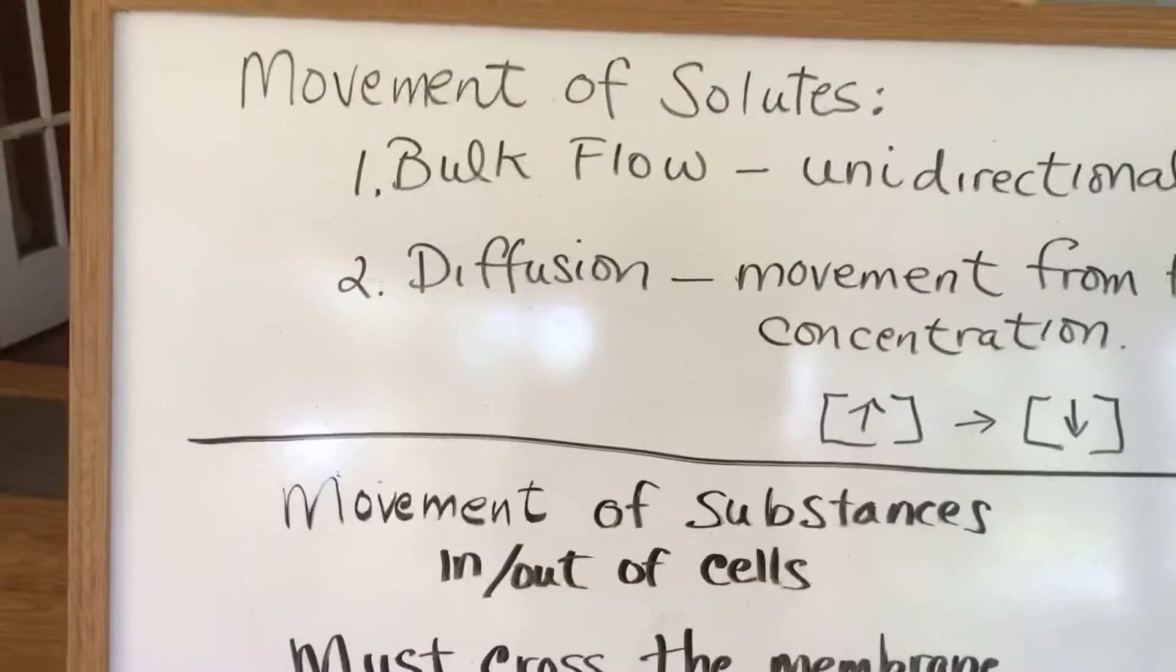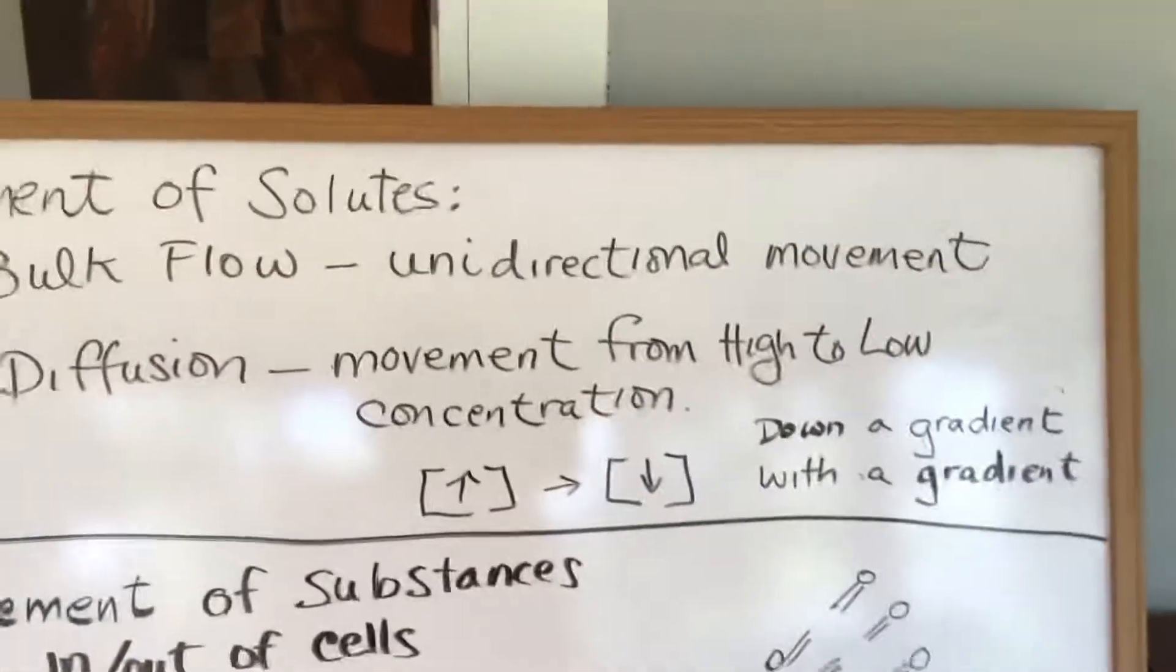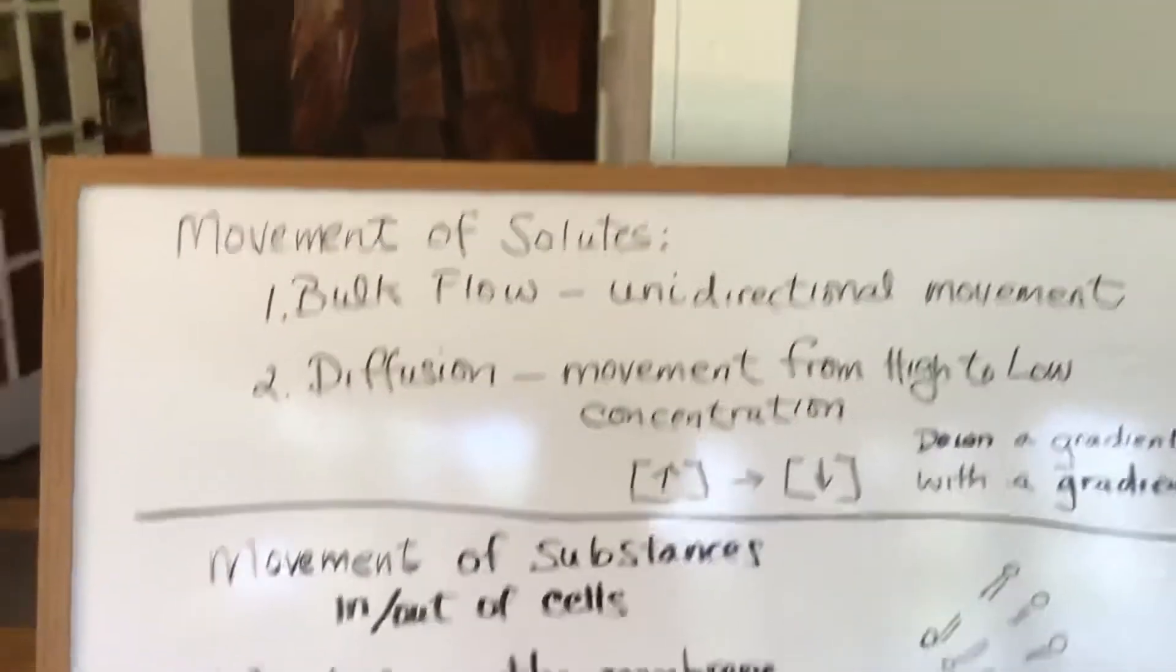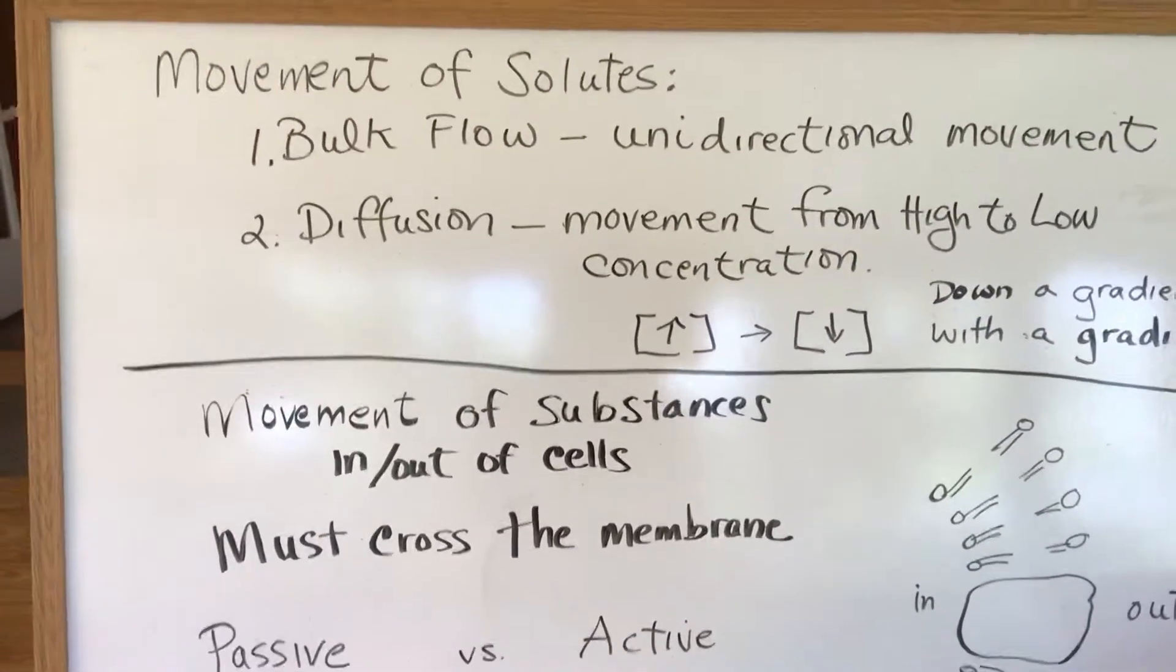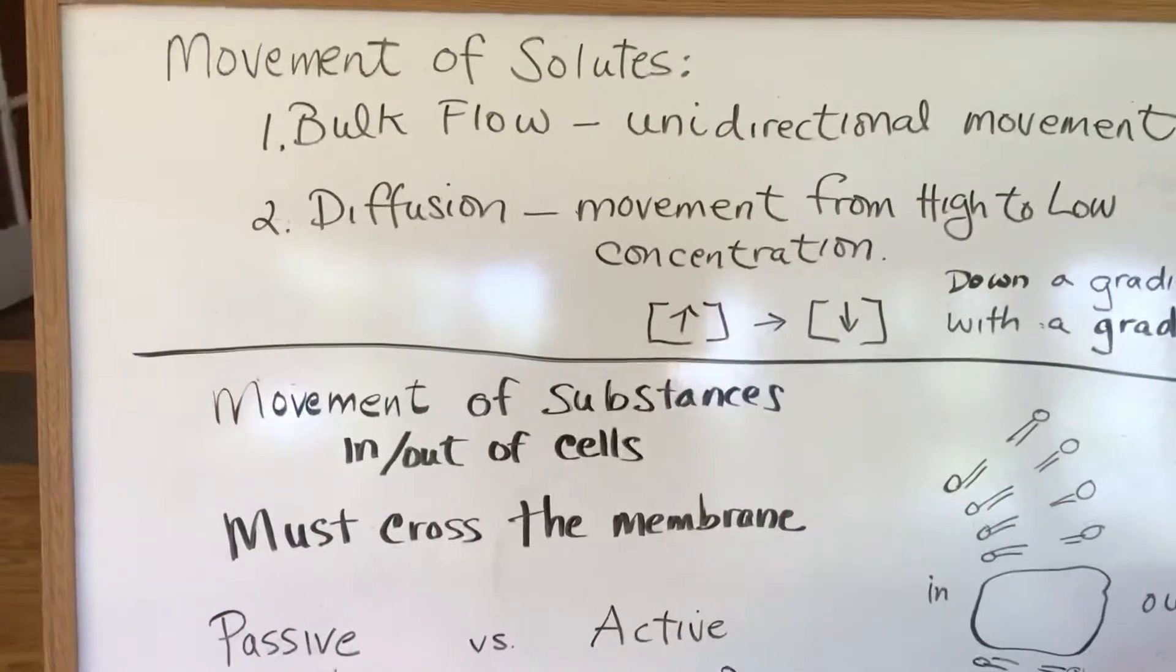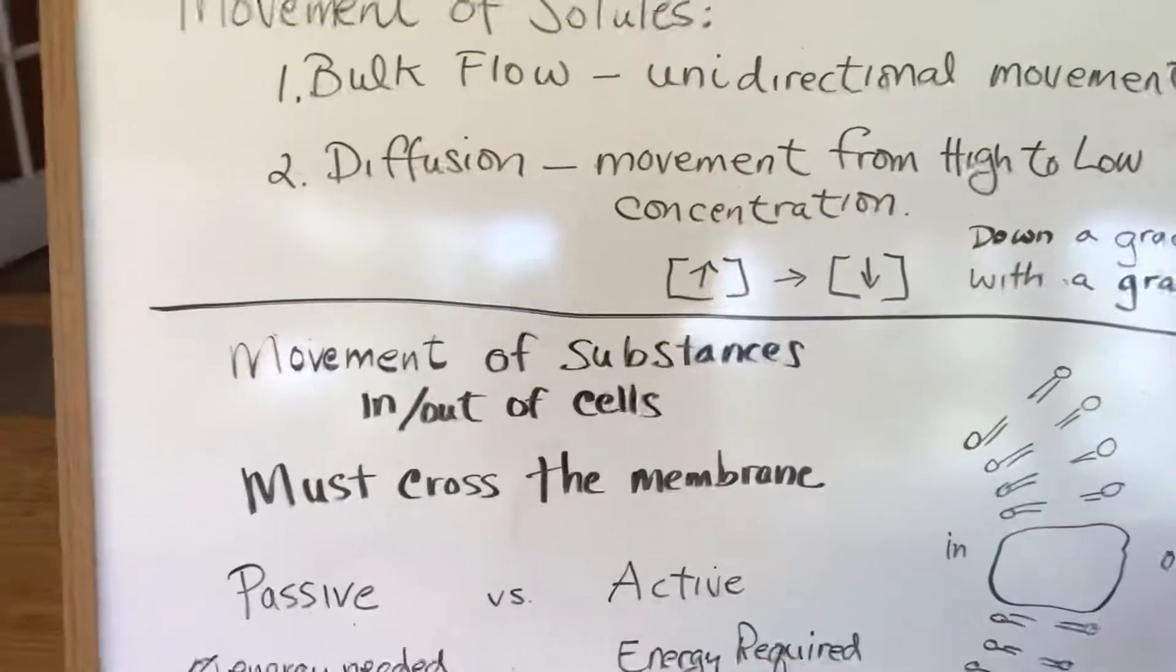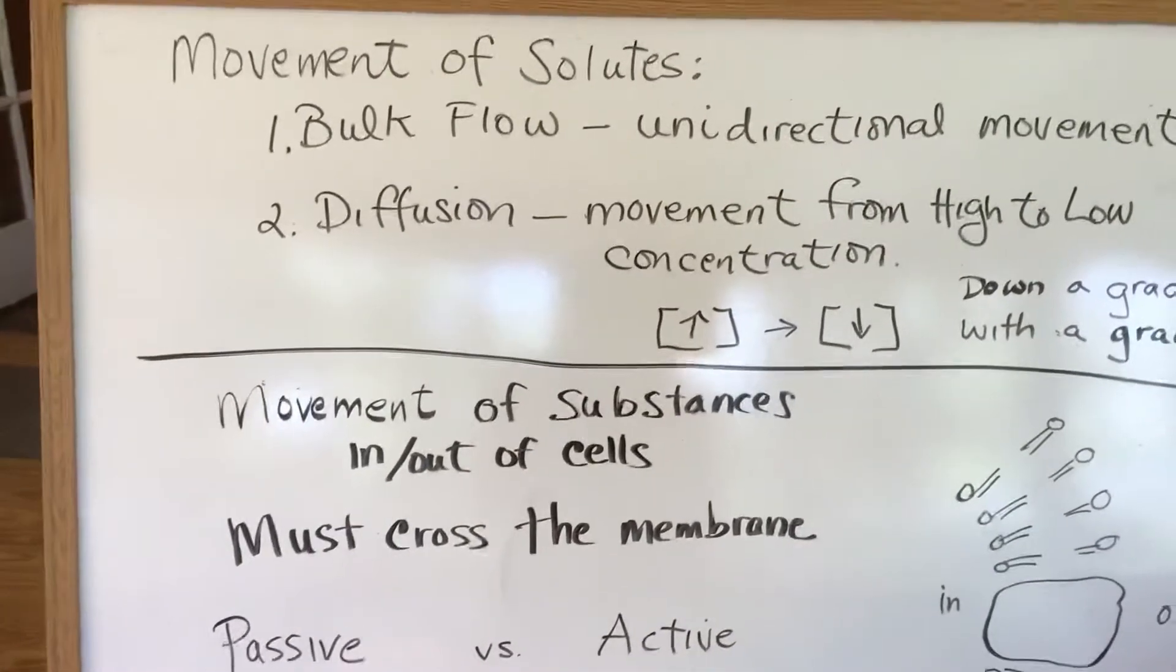One is called bulk flow. Bulk flow is the unidirectional movement of a substance. I always kind of think of this as like the Itchituckney. If you went down the Itchituckney in tubes, you're going to go with the direction of the river.